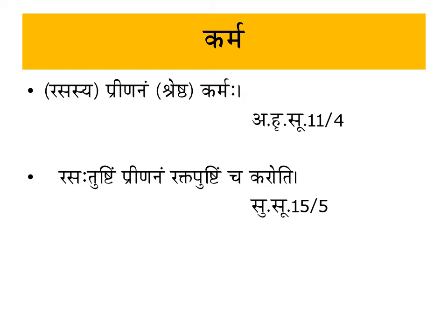Additionally, as Sushrutacharya states: 'Rasa Trishtim Prinanam Rakta Pushtim cha Karoti.' The first is Trishti — a mental emotion or satisfaction; the appeasement of hunger and thirst upon obtaining food and water, which brings a kind of satisfaction (Samadhan), is called Trishti. This is the Jeevan karma described by Sushrutacharya. Then, Rakta Pushti — Ras Dhatu aids in the formation and nourishment of Rakta Dhatu from its nutritive portion.